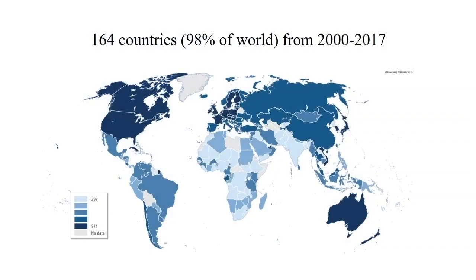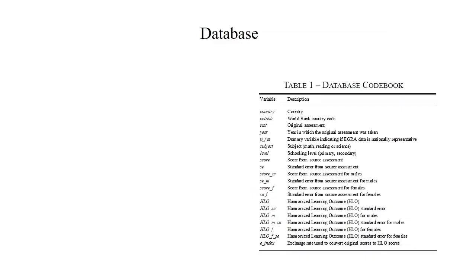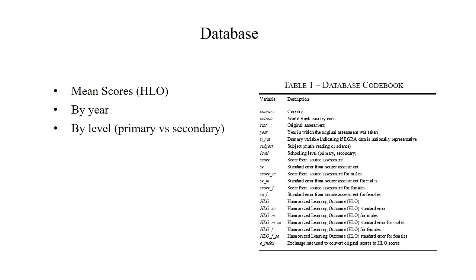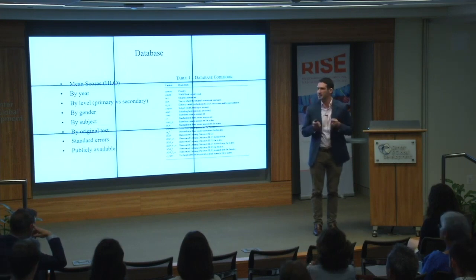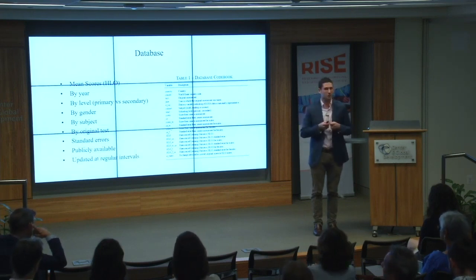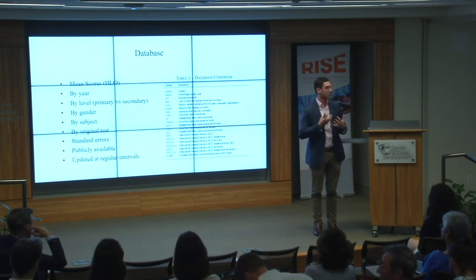The database covers over 98 percent of the world from 2000 to 2017 — we're still adding more countries. The goal is to be pretty disaggregated: rather than highly aggregated past databases, we provide mean scores by year — not just five-year intervals, but by exact year — by schooling level (primary vs. secondary), by gender, by subject, by original test, as well as standard errors to quantify uncertainty. It will be publicly available and updated at regular intervals with full transparency so users can see how the data comes together.